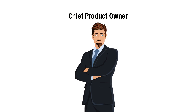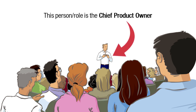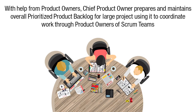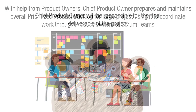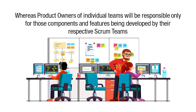The first role is Chief Product Owner. In the case of large projects with numerous Scrum teams and multiple product owners, it is still necessary to have one single person who makes the day-to-day business decisions. This person, or role, is the Chief Product Owner. This role is responsible for coordinating the work of multiple product owners. With the help from the product owners, the Chief Product Owner prepares and maintains the overall prioritized product backlog for the large project, using it to coordinate work through the product owners of the Scrum teams. The Chief Product Owner will be responsible for the final deliverable of the project, whereas the product owners of the individual teams will be responsible only for those components and features being developed by their respective Scrum teams.